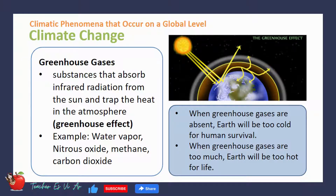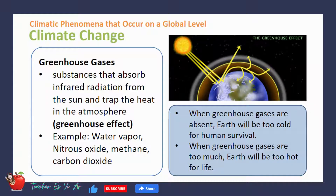Some of the greenhouse gases are water vapor, nitrous oxide, methane, and carbon dioxide. The absence of greenhouse gases will be too cold for human survival, but too much greenhouse gases will be too hot for life.